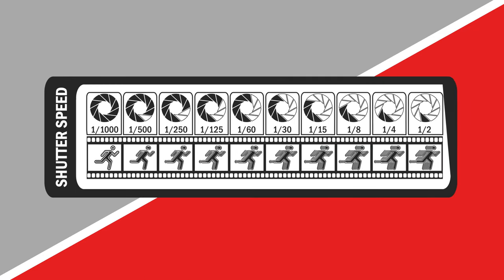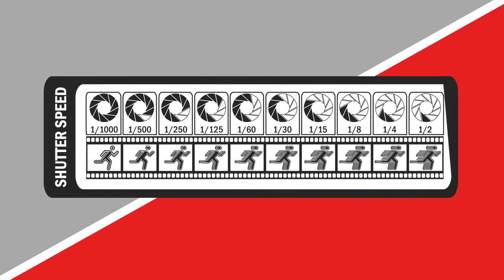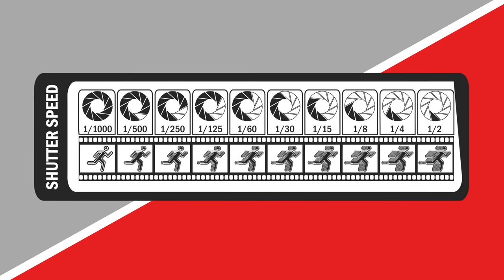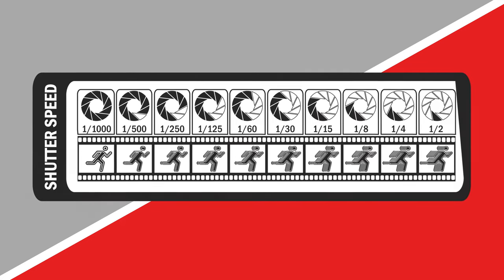A longer shutter speed is represented as a smaller number. So 1/25th compared to 1/5,000th of a second — your 1/25th is going to have more motion blur in the image, whereas your 1/5,000th of a second is going to be a much crisper, cleaner image without any motion blur.